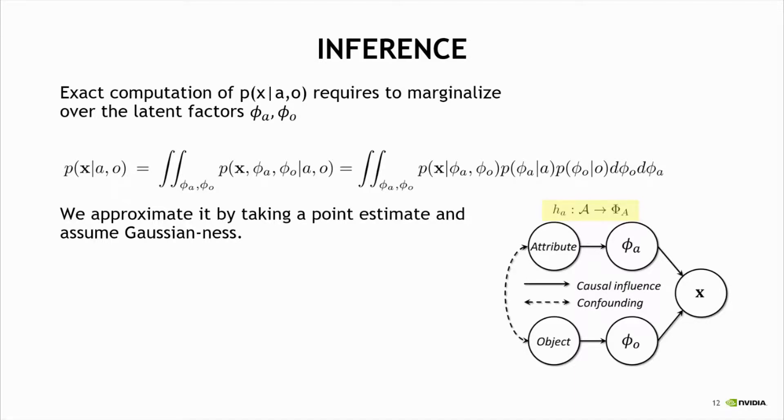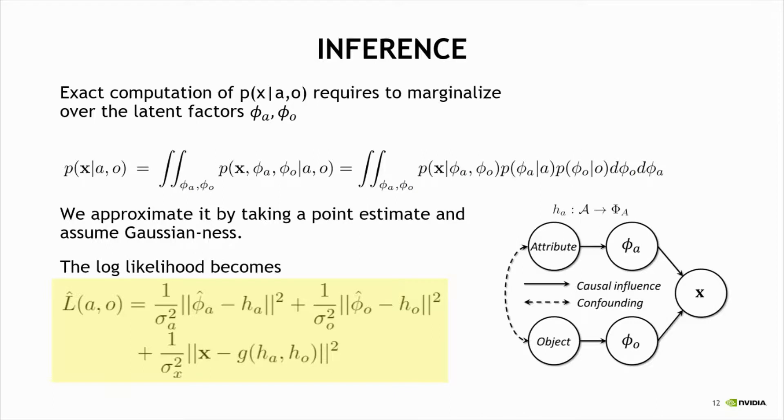Because this is a latent variable, we don't see it, and we estimate it back from the image. Under this assumption of Gaussian stochasticity, the log likelihood becomes very nicely behaving and results with three embedding-like terms: how good is the representation of the attribute, how good is the representation of the object and of the image. And finally, we select the attribute and object that maximize this likelihood.